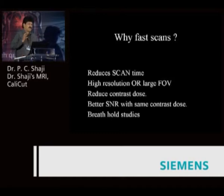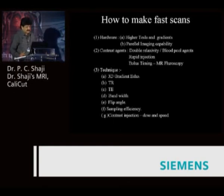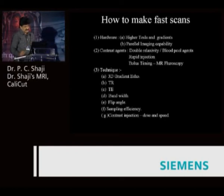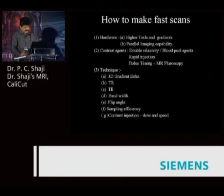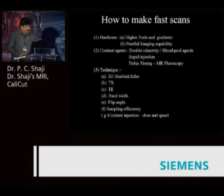Our aim should be to get a very good scan in a short time. How do you achieve fast scans? There are hardware approaches such as achieving better resolution or better contrast at higher Tesla, or by using parallel imaging techniques, or with contrast agents — injecting contrast agents gives you better SNR. There are many other technical details one should know, because image quality depends on all these factors. If you know how image quality is modified by these techniques, it is much easier to adapt your technique to the clinical situation.